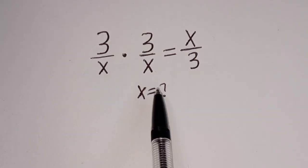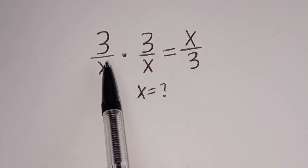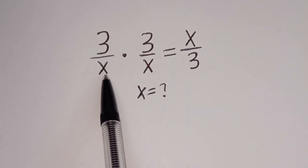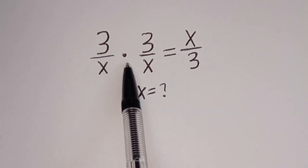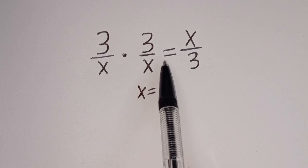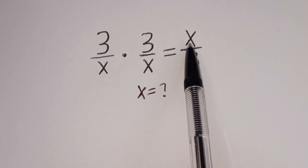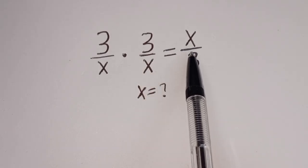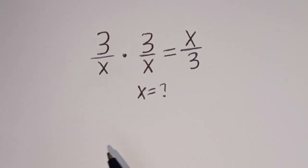Hello. How to solve for s in this equation: 3 divided by s, multiplied by 3 divided by s, is equal to x divided by 3.